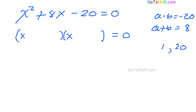Well, 1 plus 20, there's no way we can get 8 out of that. Even though one of these numbers must be negative, right? Because we have a minus sign here. So it's definitely not that. What about 4 and 5?